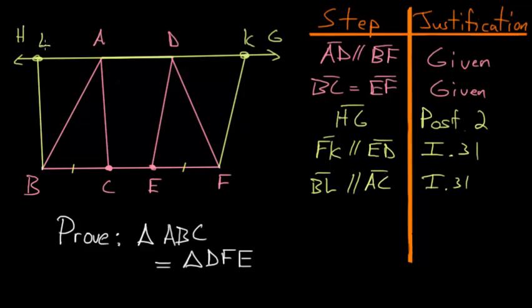From here we want to notice that we now have two parallelograms, LBCA and DEFK, and we know due to Book 1, Proposition number 36 that these two parallelograms are equal to each other because they have equal bases and they end on the same line that's parallel to their bases. So we can write that parallelogram LBCA is equal to parallelogram KFED.